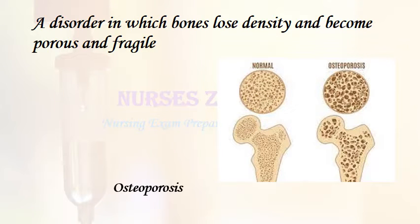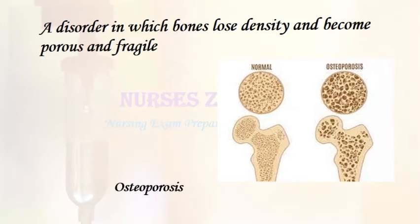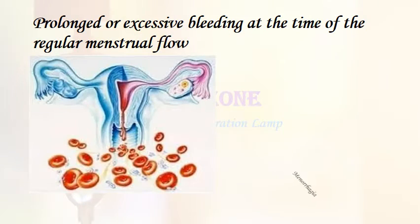A disorder in which bones lose density and become porous and fragile: osteoporosis. Prolonged or excessive bleeding at the time of the regular menstrual flow: menorrhagia.